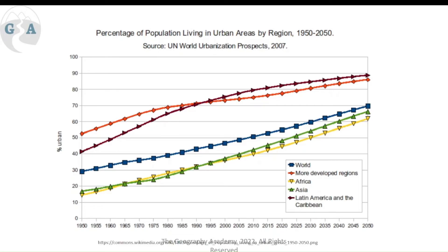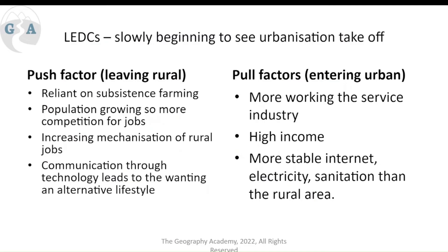Close behind are Asia and Africa — two large and distinctive territories. Their growth is set to roughly match each other, both moving rapidly in the same direction. Looking at the world overall, urbanization is going from around 30 percent to an anticipated 70 percent by 2050. It is the populations of Africa and Asia that will drive this further growth from the 2020s to the 2050s.